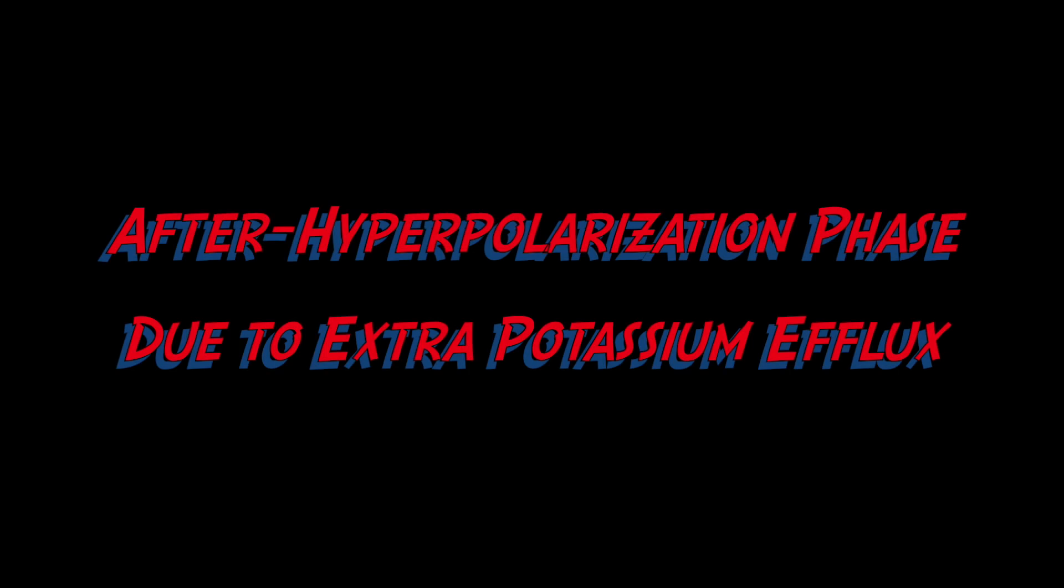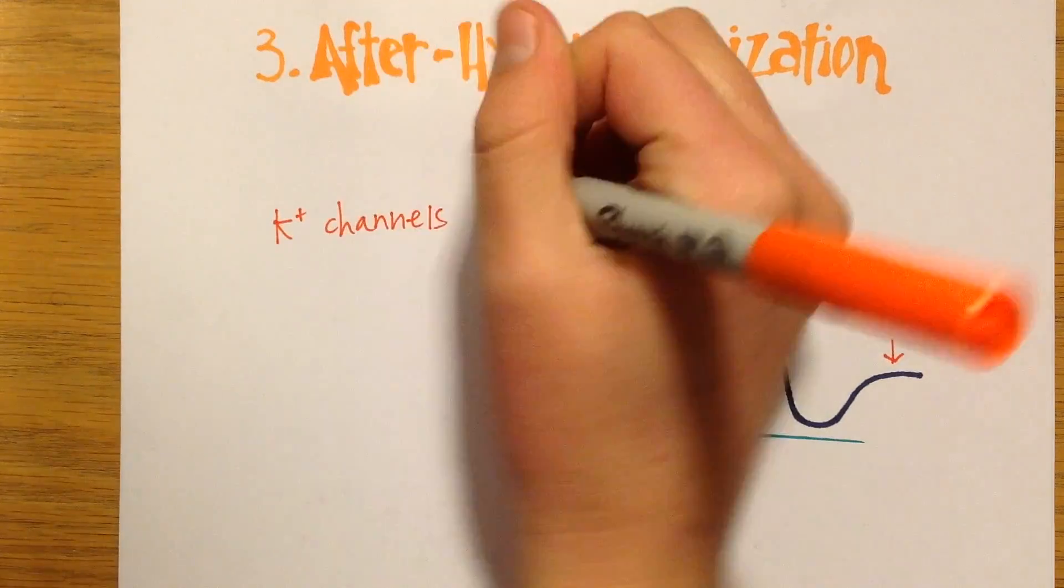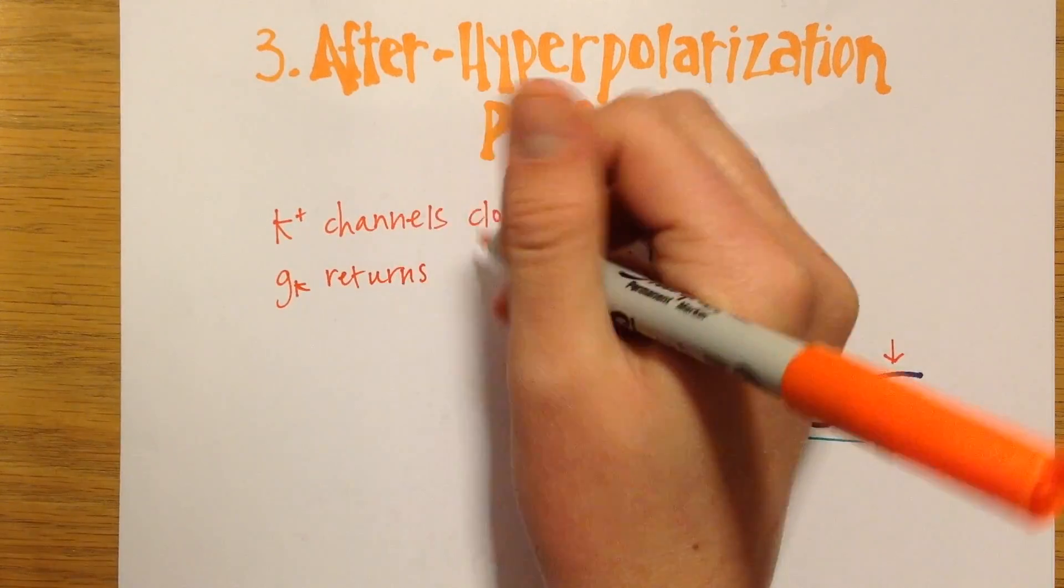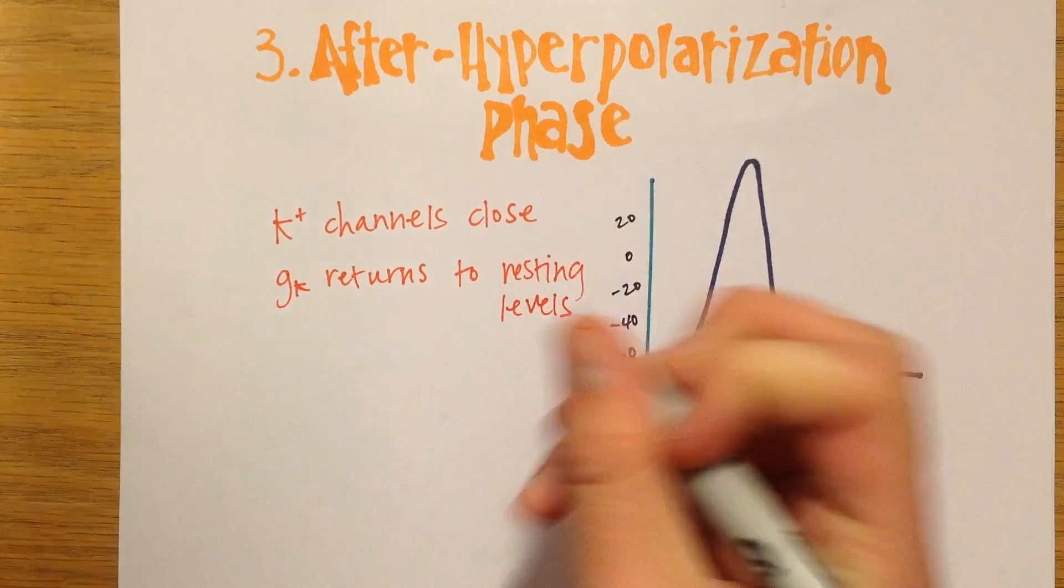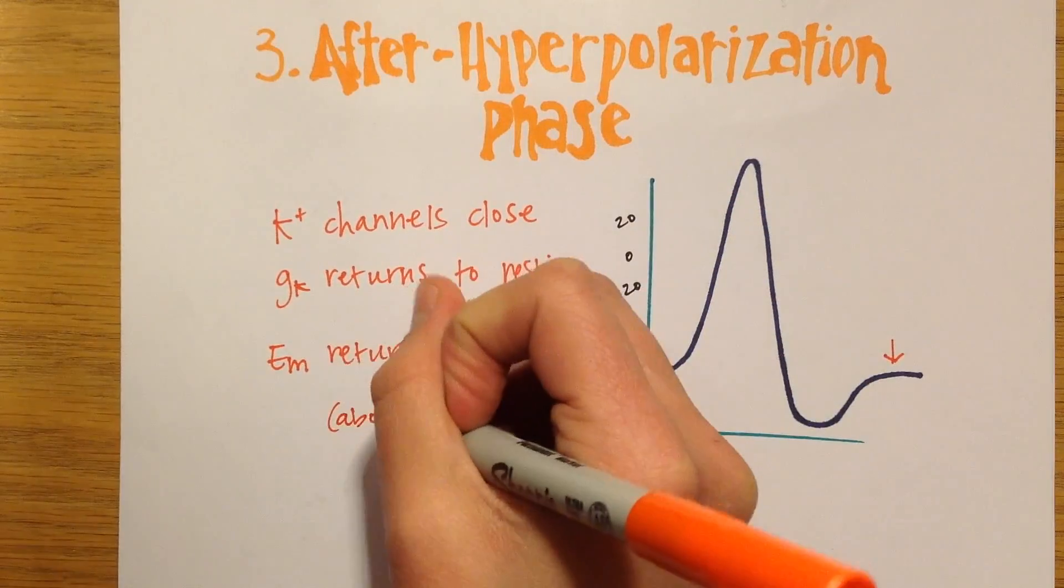The after-hyperpolarization phase is the last phase of an action potential. In this phase, the potassium channels close and the conductance of potassium returns to resting levels. Eventually, the membrane potential comes back to resting levels also, which is about negative 70 millivolts.